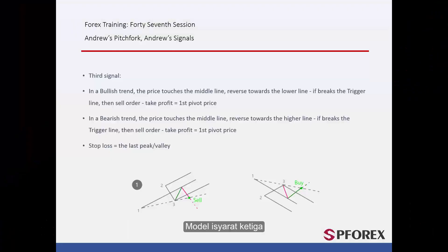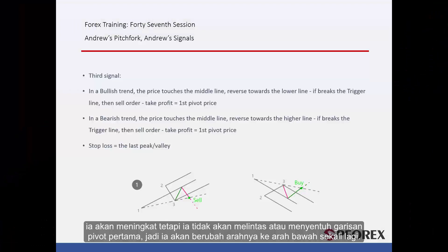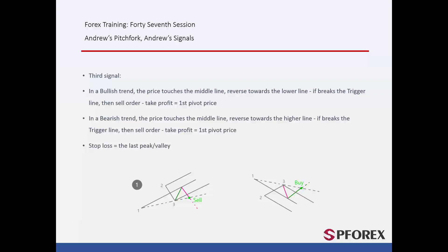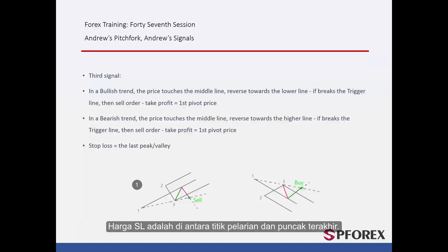Third signal model. In a bullish format, after the price has reached the third pivot, it will increase but it will not cross or touch the first pivot line. So it will change its direction towards the bottom again. After the price crosses the trigger line, a trader can place a sell order with TP price equal to the first pivot price. SL price is between the breakout point and the last peak.